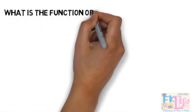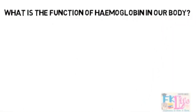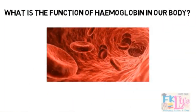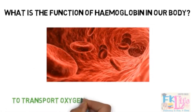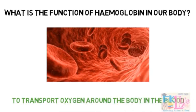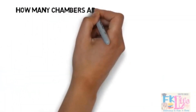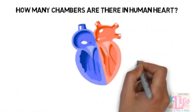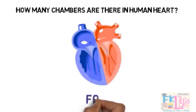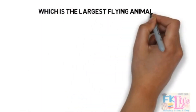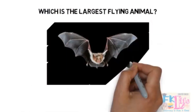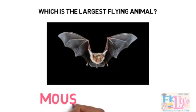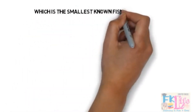What is the function of hemoglobin in our body? To transport oxygen around the body in the blood. How many chambers are there in the human heart? Which is the largest flying animal? It is the mouse-eared bat.